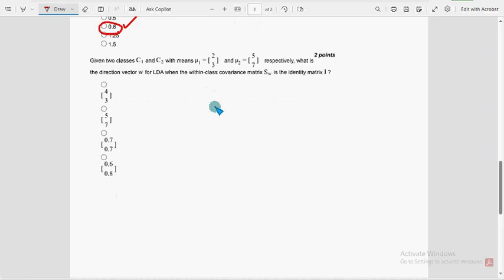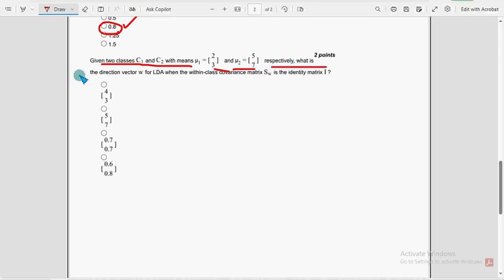Moving on to the last question of the assignment, ninth one. Given two classes C1 and C2 with mu1 and mu2 respectively, what is the direction vector W for LDA when within class covariance matrix SW is the identity matrix I? For the last question, fourth option is the probable solution, 0.6, 0.8.